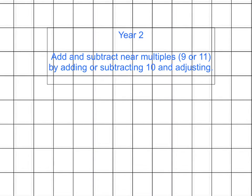Year 2: Add and subtract near multiples by adding or subtracting 10 and adjusting. In order to use this strategy, children should first be secure in their ability to add and subtract 10.